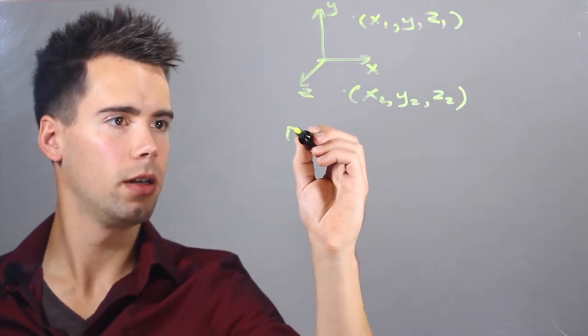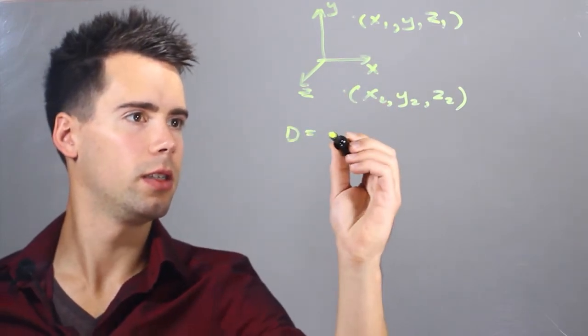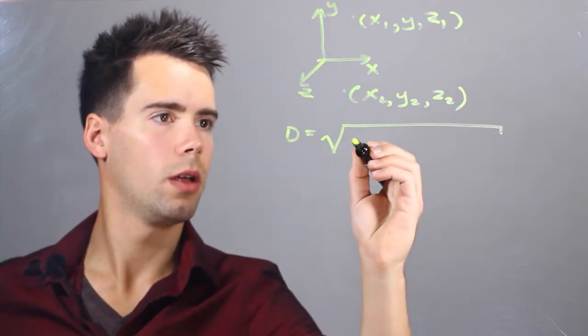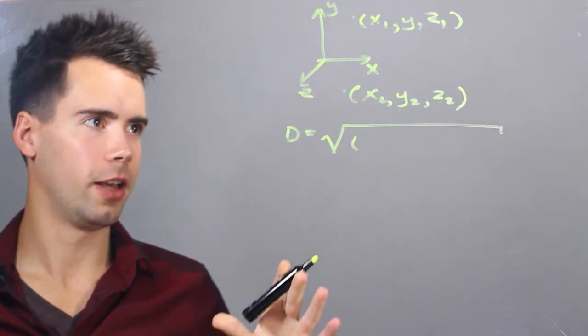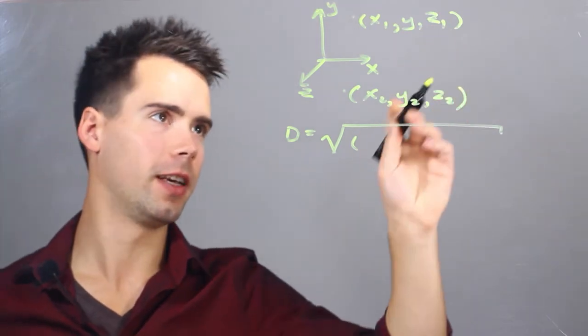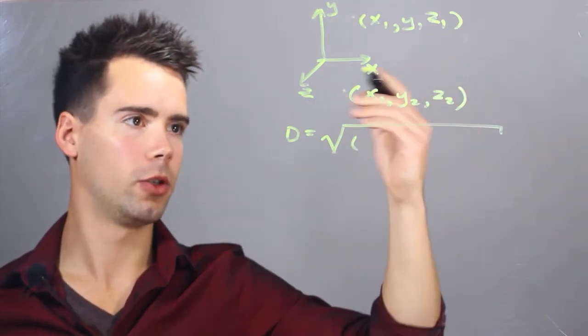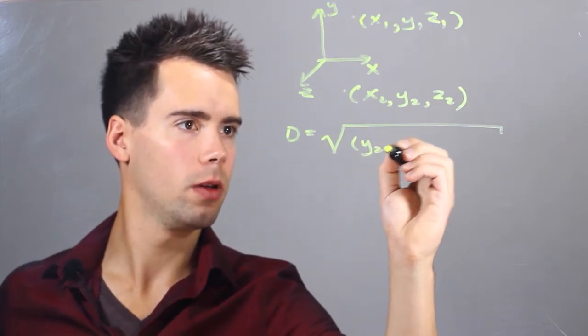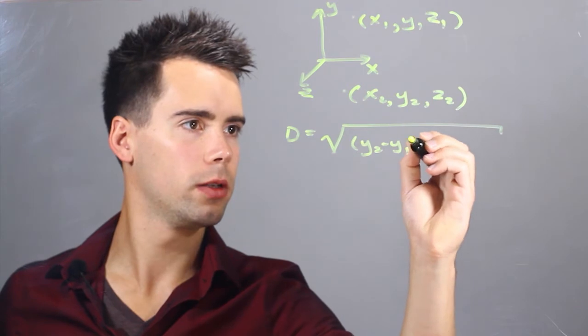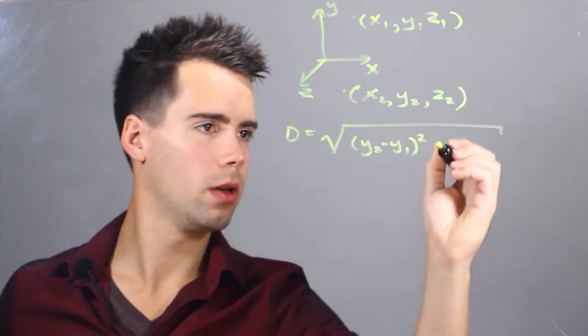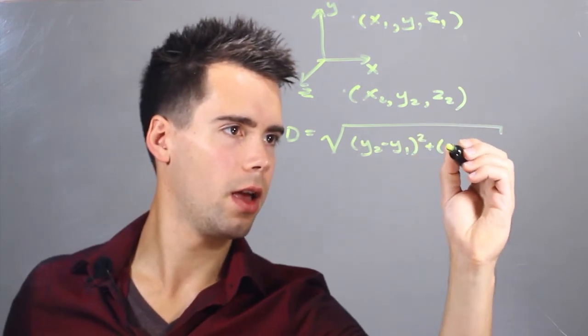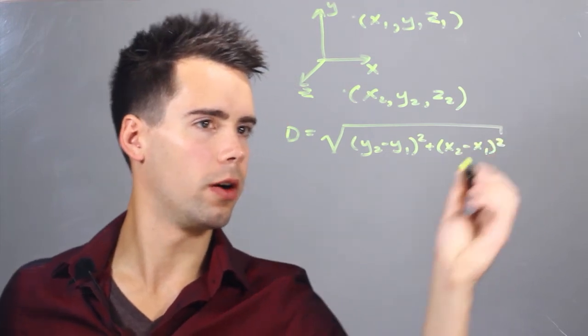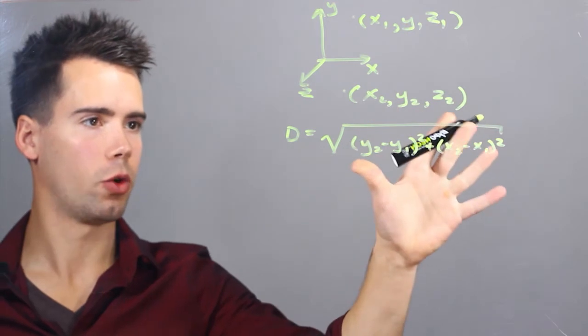we can use the equation distance is equal to the square root. Now for ease of calculation, I'm going to drop that third dimension. Let's say z2 equals z1. So we don't need that one anymore. And we can say that y2 minus y1 squared is nonzero. And likewise, x2 minus x1 squared is also nonzero. So this is the distance equation.